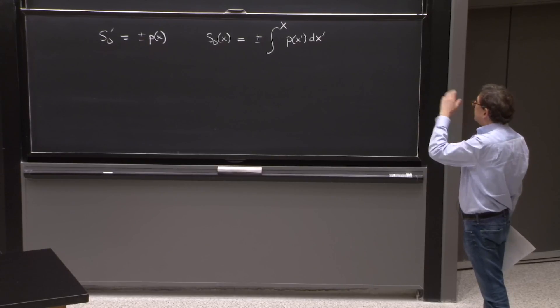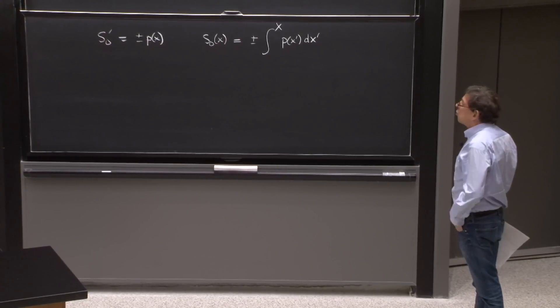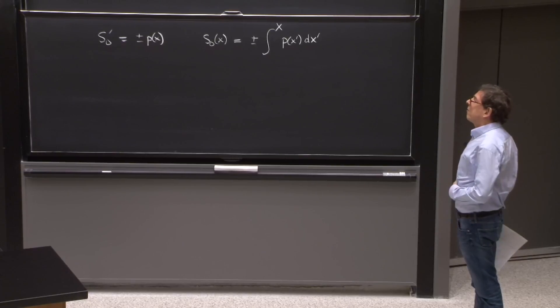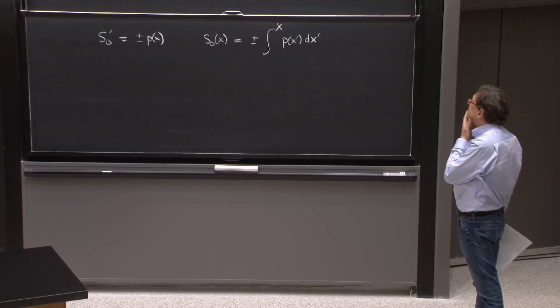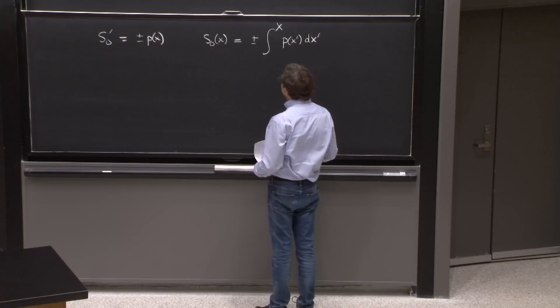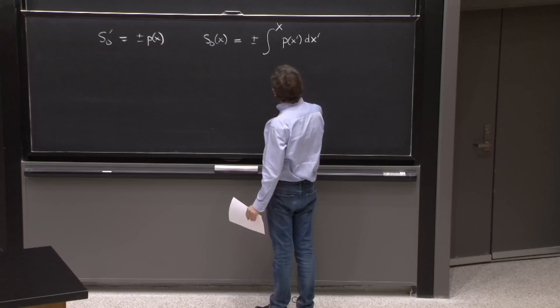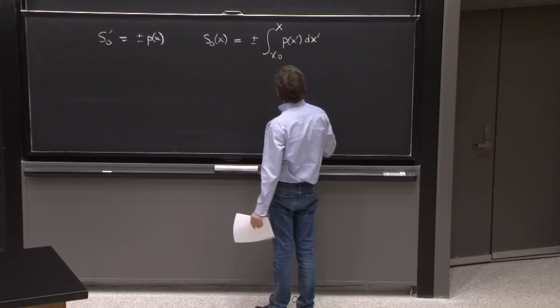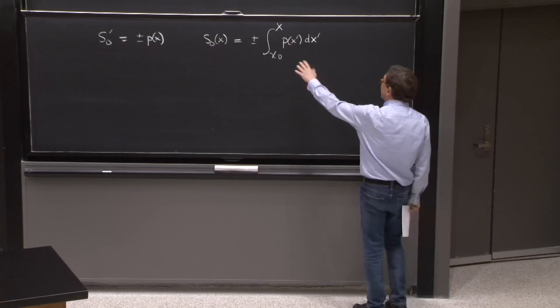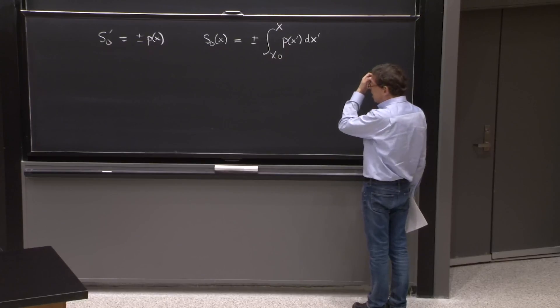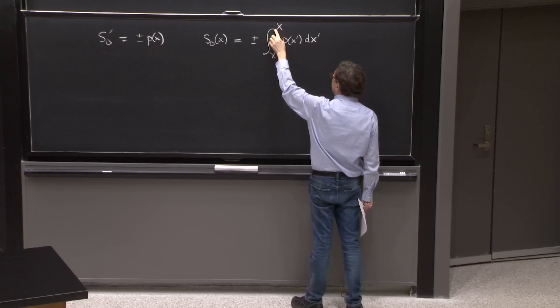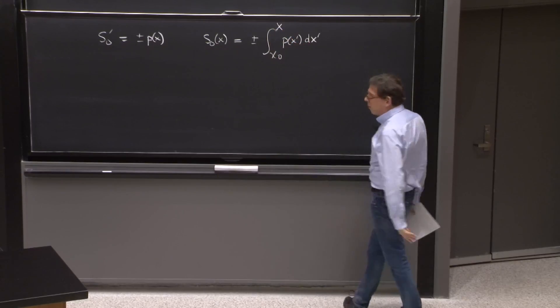And it depends on e minus v. So this is a solution in terms of p of x. We should think of solving the differential equation in terms of p of x. Now, as a first order differential equation, there's a constant of integration. And we'll pick it up to be a number here, x0. So we start integrating from some place. If you integrate from another place, you're shifting the constant of integration. The main thing is that the x derivative here acts on the upper limit and gives you the p of x of that equation.